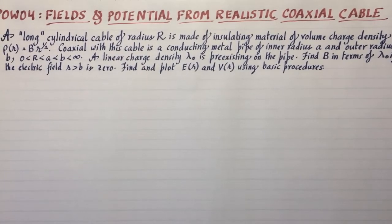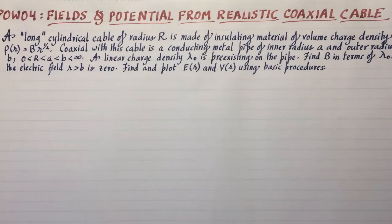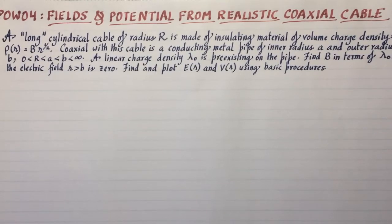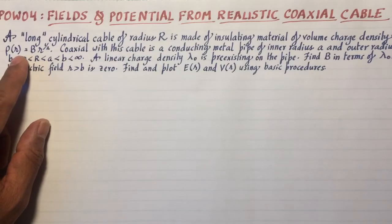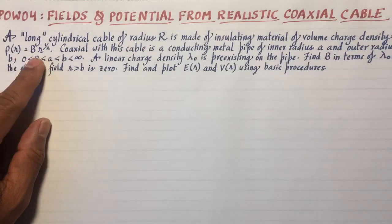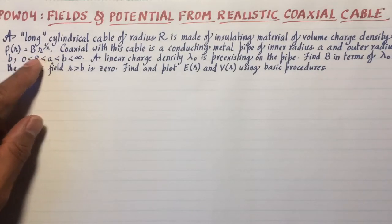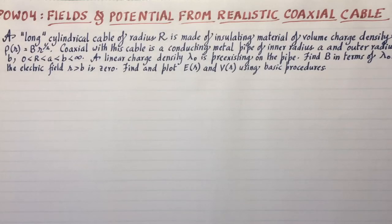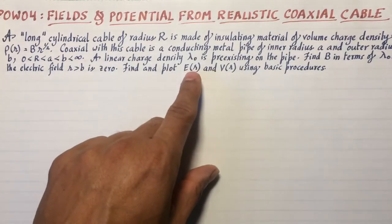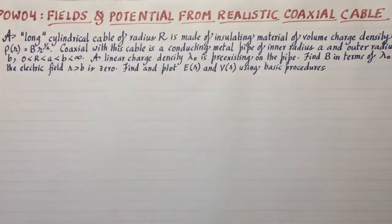We're going to suppose that the insulating material that makes up the core of the coaxial cable has a charge density given by the volume charge density ρ(R) = B times R to the power half. And the metal pipe itself has got a pre-existing linear charge density λ₀. I could have specified also if I wanted a surface charge density σ₀ instead of λ₀.